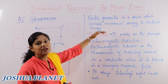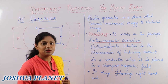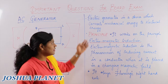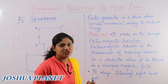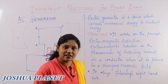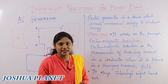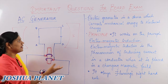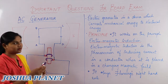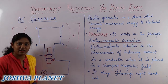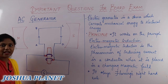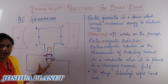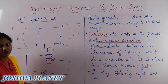Attempting the question point-wise makes your answer look very attractive. The person correcting your paper will feel that the child knows everything, that's why it is represented in a beautiful point-wise manner. So for all questions, try attempting the answer point-wise. The first point is the definition — how will you explain what a generator is? A generator is a device which converts mechanical energy to electrical energy. Here we have fixed a galvanometer in the electric generator so that you can detect whether current is produced or not.